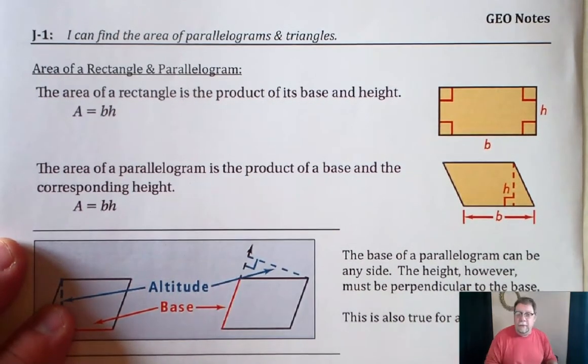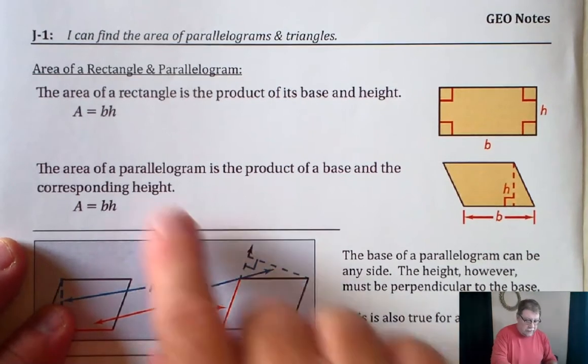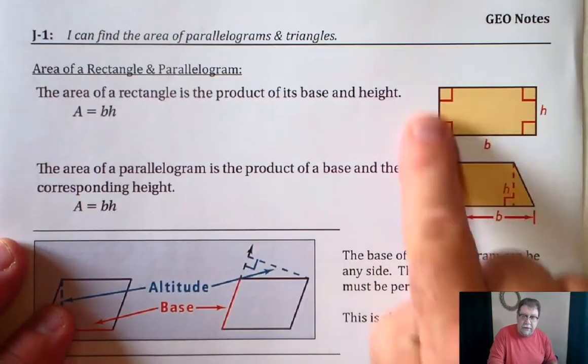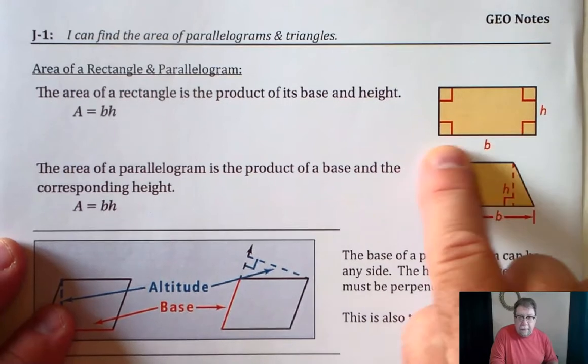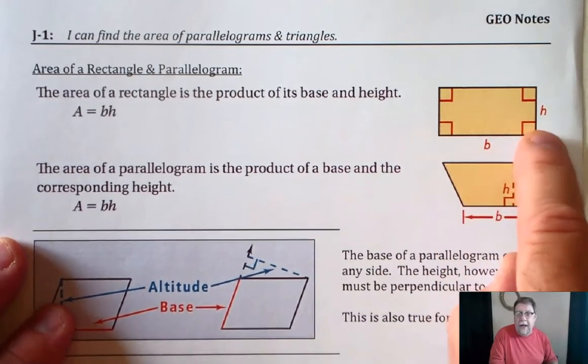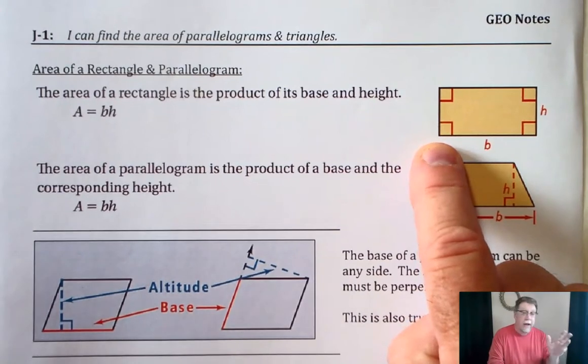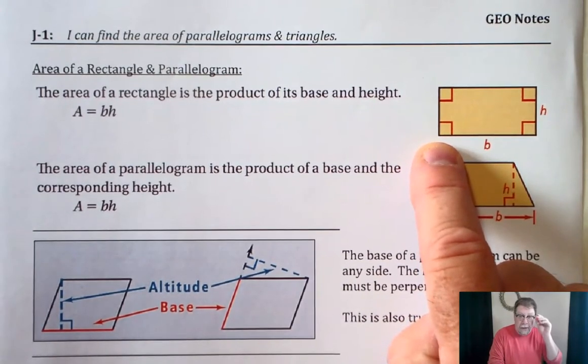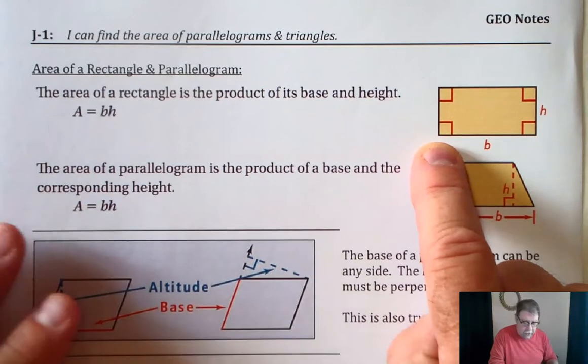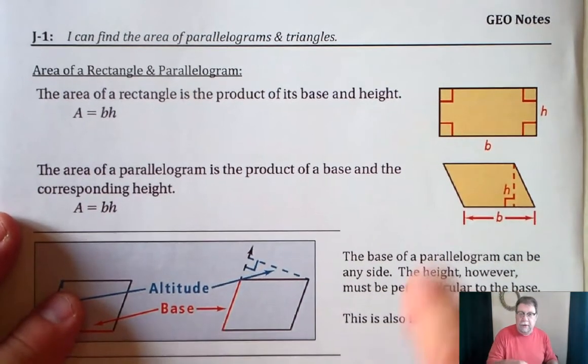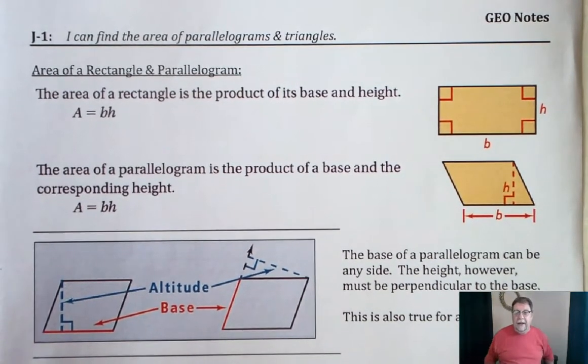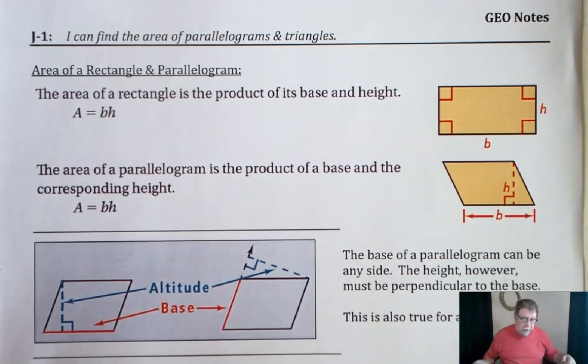First of all, area of a rectangle, you should already know, is the base times the height. So here's a rectangle, the length of the base, or some people call it length times width. But I want to use the term base and height because we're using those terms quite a bit, not only with area, but later on we'll be looking at some three-dimensional shapes, and we'll talk about bases and heights of those shapes as well.